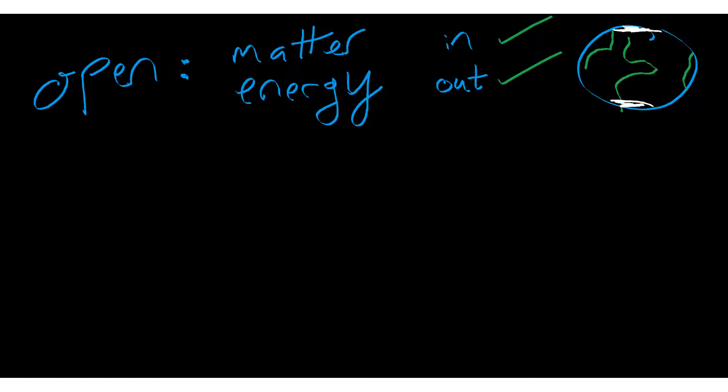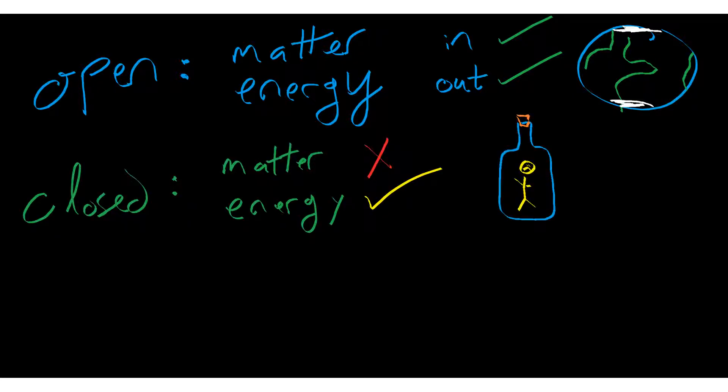A closed system: energy can move in or out, but matter cannot. Like a glass bottle. Light can go in or out. Heat can go in or out of that glass bottle. Matter can't go through the glass, but energy can.